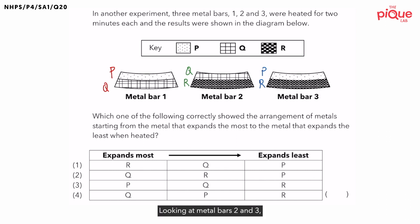Looking at metal bars two and three, we can see that metal R expanded more than both metals P and Q. So what can we say about the rate of expansion for metal R? This means that metal R expands the most out of the three metals.